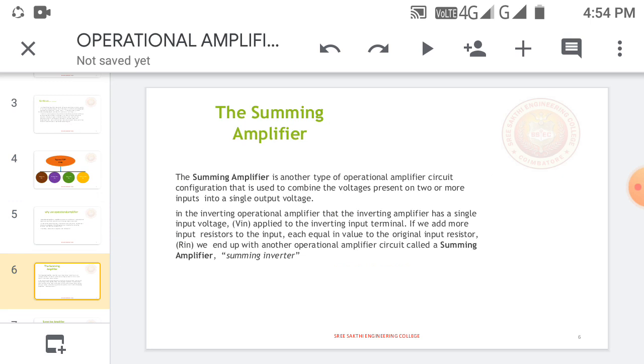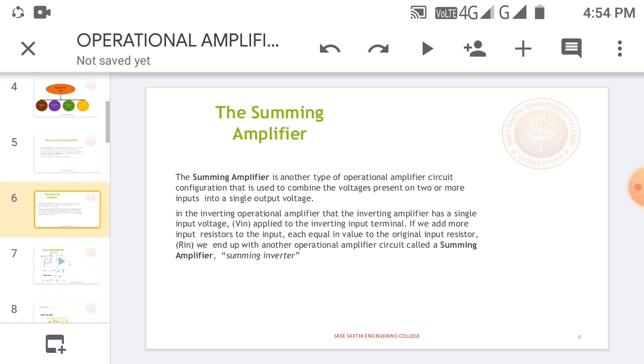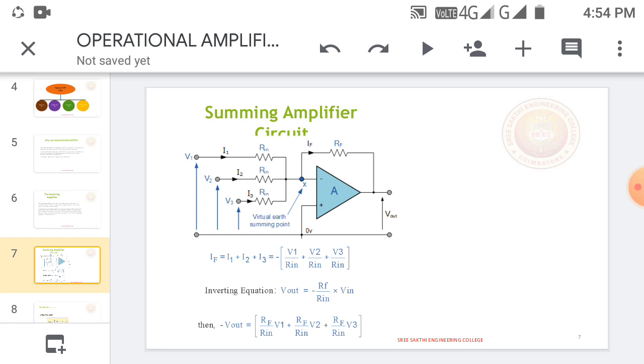If we consider the summing amplifier, summing amplification may use 3 signals, 4 signals, etc. In this course, we take 3 inputs: V1, V2, and V3. These are given to the inverting terminal and the non-inverting terminal is grounded, meaning it is 0 volts.